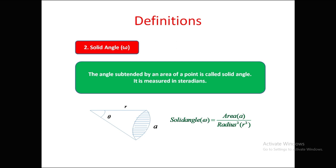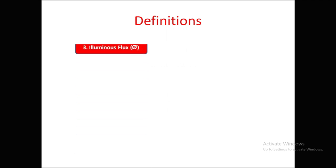That area is called A, and omega is the solid angle, r is the radius. So solid angle omega equals area divided by radius squared — omega = A/r² — where A is the shaded area divided by radius squared.